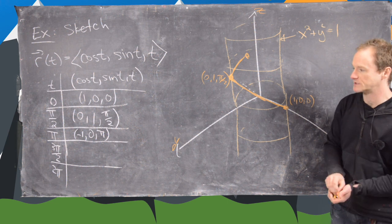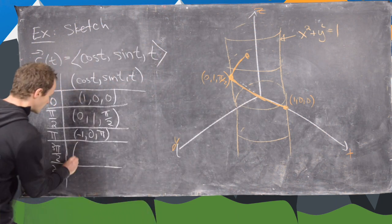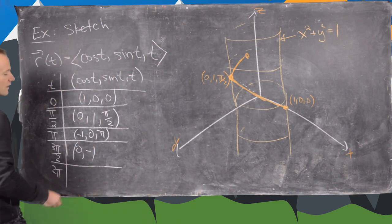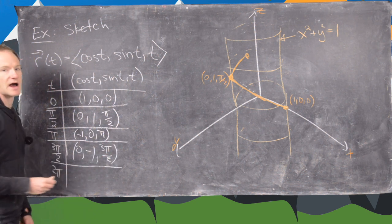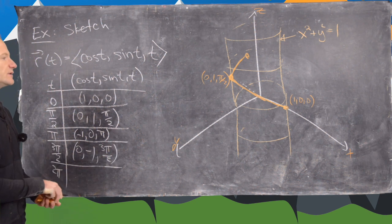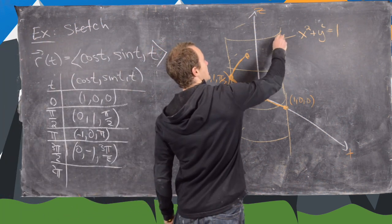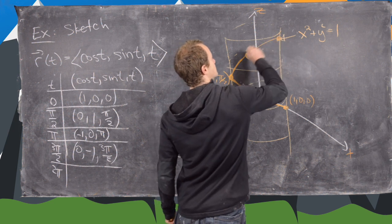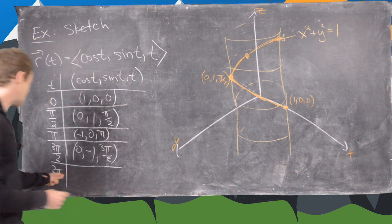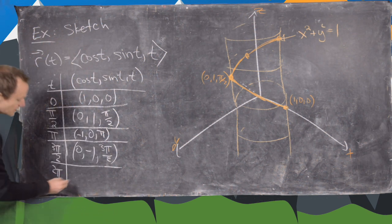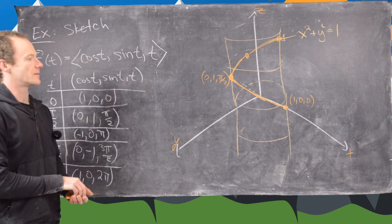So now the next point we would do is 3 pi over 2, and notice that's going to give us 0, negative 1 along the y direction and then 3 pi over 2. In other words, 3 halves pi along the z direction. So we've gone up even higher but now we're back in the negative y-axis. So that would be like maybe up here. So we've gone up to that point.